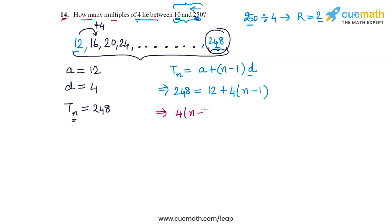And now let's simplify. So we get 4 times n minus 1 equals 248 minus 12. So that's 236. And this means that n minus 1 equals 236 by 4. This is equal to 59. So n minus 1 equals 59, and this means that n equals 1 plus 59, or n equals 60.